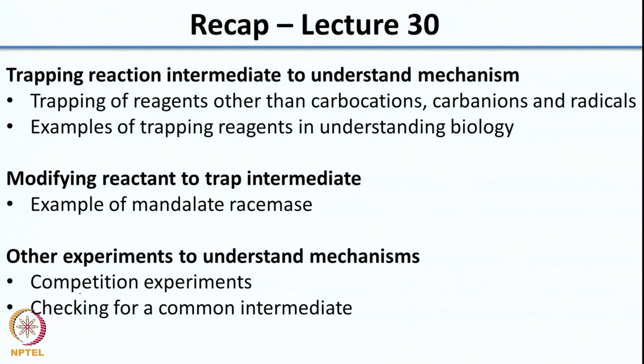Welcome back. In the last class we looked at how you can trap intermediates other than carbocations, carbanions and radicals using suitable trapping agents. We had looked at the example of the benzyne intermediate and how you can trap that using the Diels-Alder reaction. We had also seen how trapping reagents can be used to understand biology, and how you can modify the reactant to trap a particular intermediate — seen in the example of mandelate reductase where a model substrate was chosen to trap the intermediate.